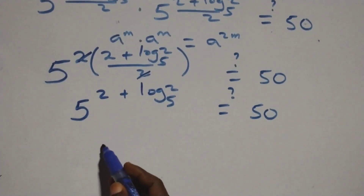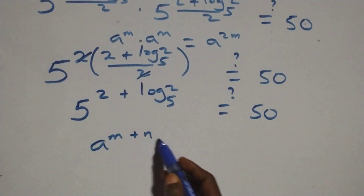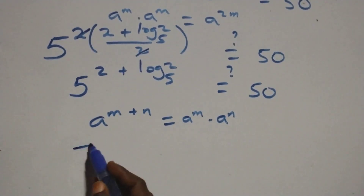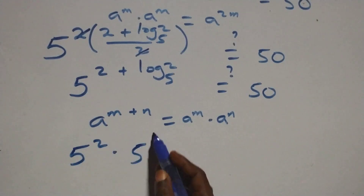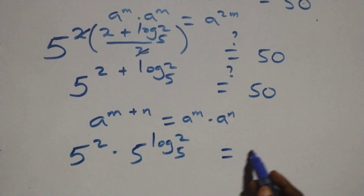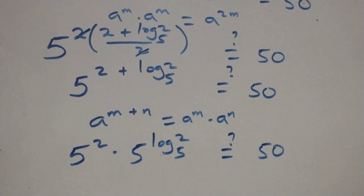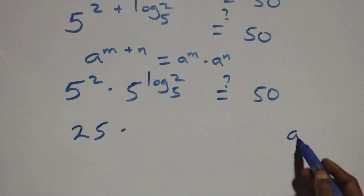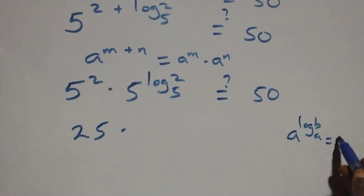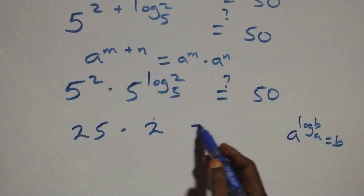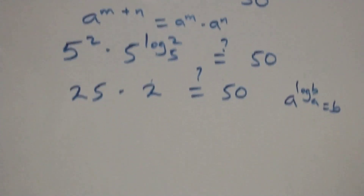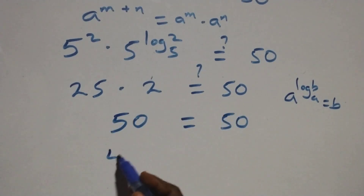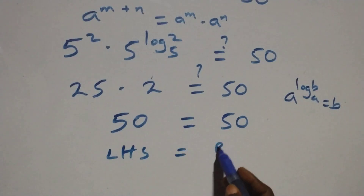Applying the law of indices — a raised to power m plus m is the same as a raised to power m times a raised to power m — we split the exponent. Using the identity a raised to power log b to base a equals b, that part becomes 2. So we have 25 times 2, which of course is 50, and that equals 50 on this side. The left hand side equals the right hand side.